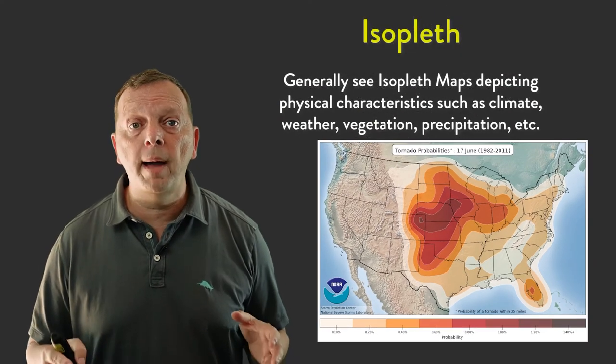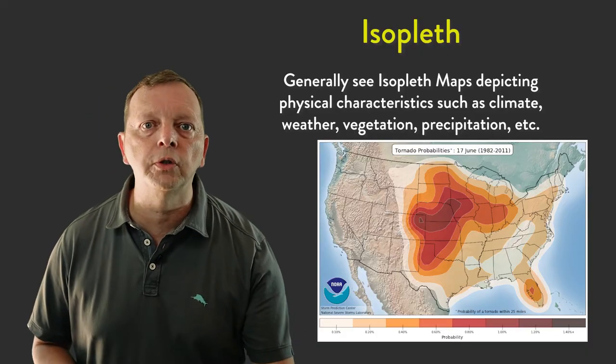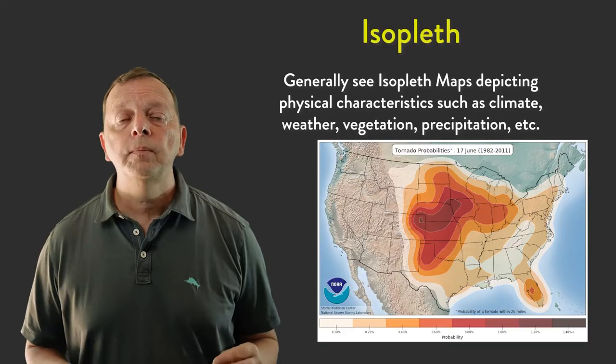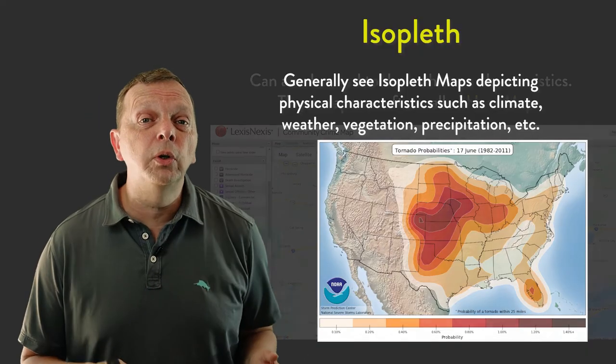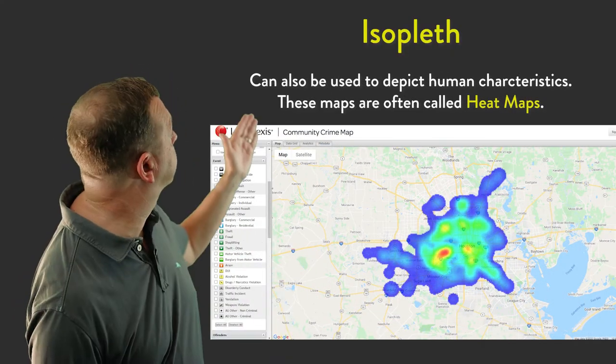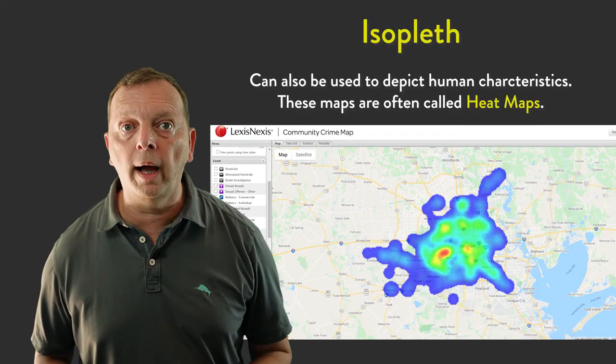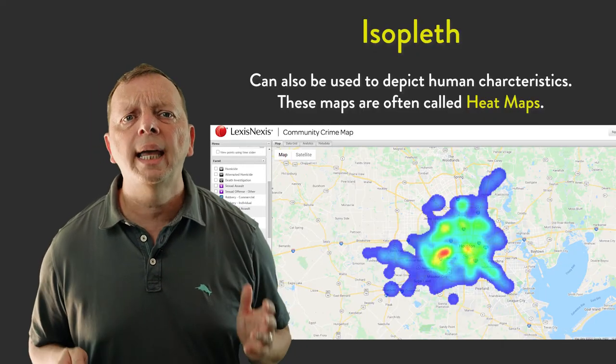We generally tend to see isopleth maps used to show physical characteristics. This is elevation, temperature, precipitation, and vegetation. However, isopleth maps are also used to provide insights on human characteristics as well. For example, this is a map of Houston, Texas that shows you where you have the most amount of crime. These are also known as heat maps.